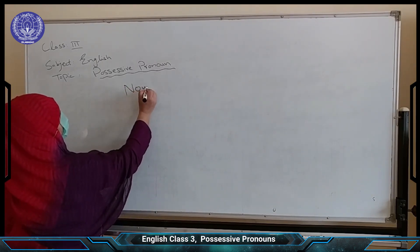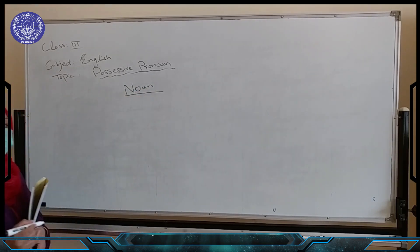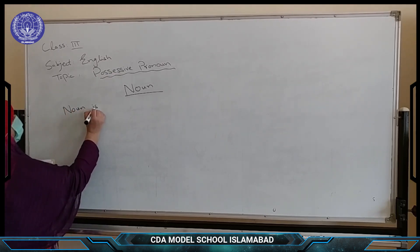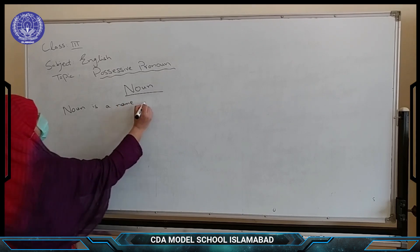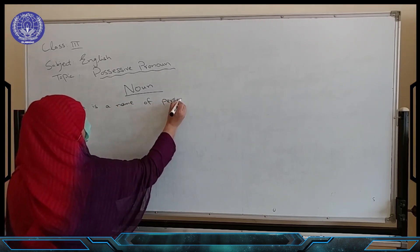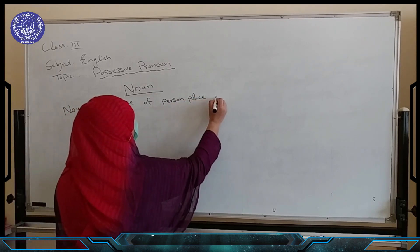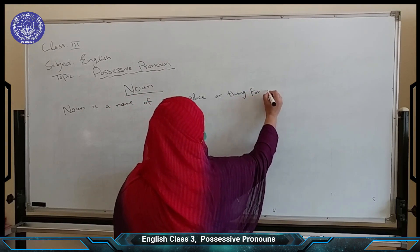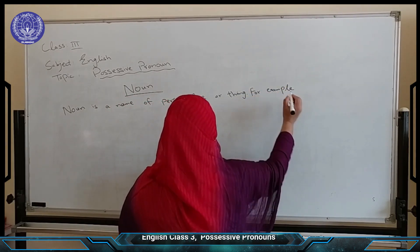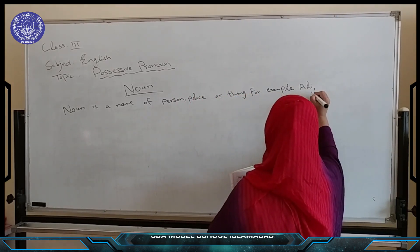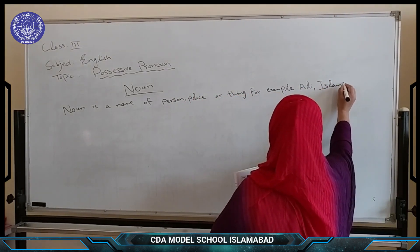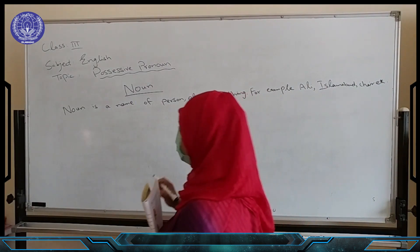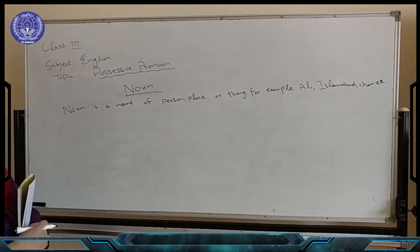As all of you know, what is Noun? Noun is a name of person, place or thing. For example, any name — Ali, Islamabad, chair etc. This is called a Noun. So Noun is a name of person, place or thing.